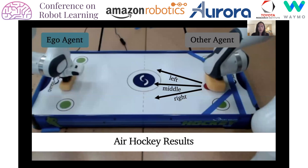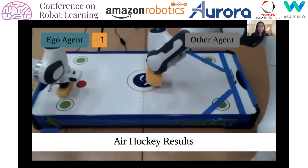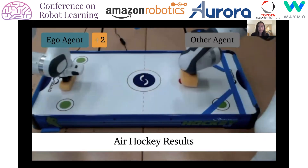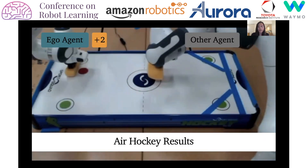We test our approach in the air hockey game described earlier. The agent earns plus one reward for blocking, and if it blocks the puck coming down the left side, it earns plus two reward. So influencing the opponent to aim left more often will lead to higher long-term rewards.